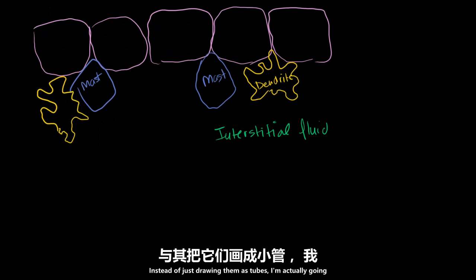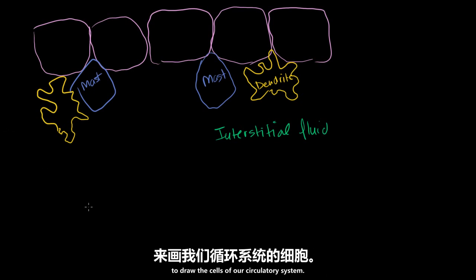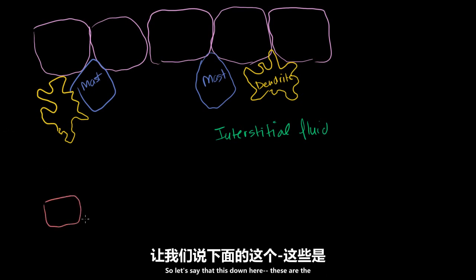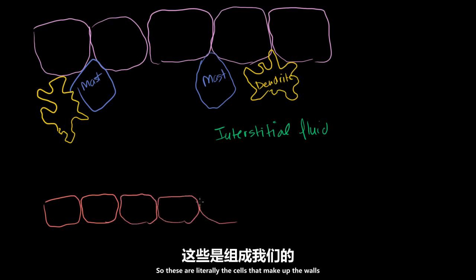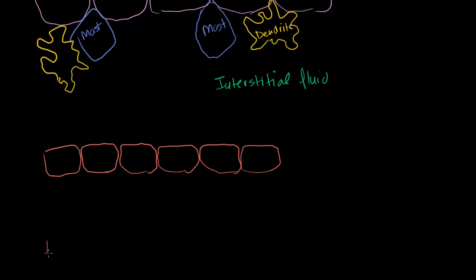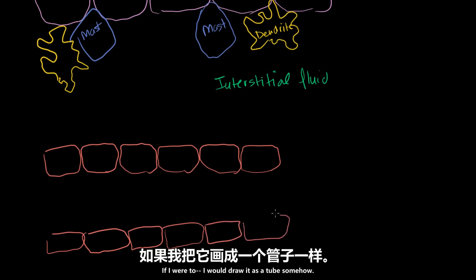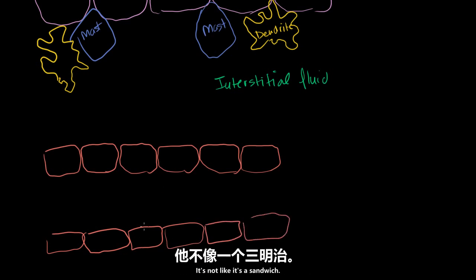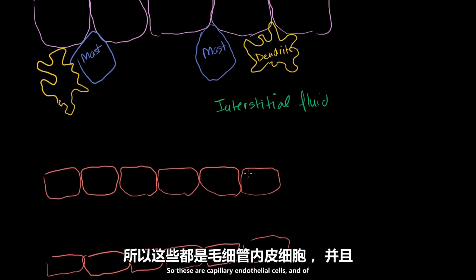Instead of just drawing them as tubes, I'm actually going to draw the cells of our circulatory system. Let's say that these are the endothelial cells of our capillaries — literally the cells that make up the walls of our capillaries. It's actually a tube in cross-section. So these are capillary endothelial cells.